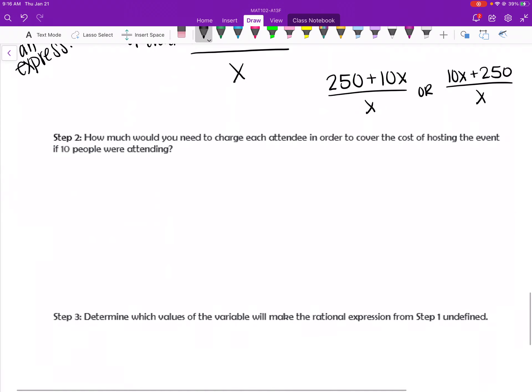Step two says, how much would you need to charge each attendee in order to cover the cost of hosting the event if 10 people were attending? What that says is you are going to let x equal 10. So I've got my equation 10x plus 250 divided by x. And where there was an x, I'm going to replace it with a 10 because there are 10 people that are joining.